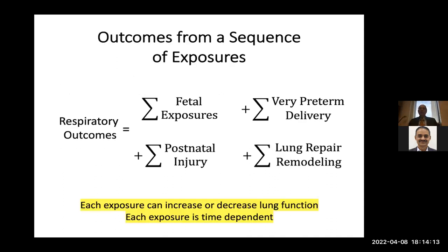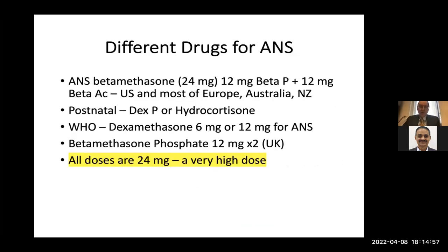When we think about steroids, we have to think about a differential equation. We have fetal exposure, very preterm exposure — with lots of steroids used for blood pressure support — and postnatal injury where steroids are used early in the course of BPD, and also chronically for babies in a stage of lung repair and remodeling. Our total use of steroids is actually very high, and we have to be aware of previous exposures when thinking about dosing.